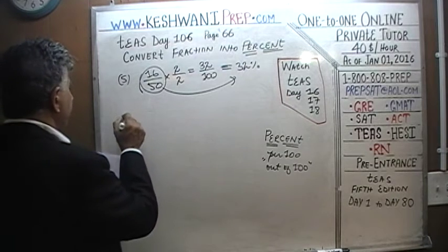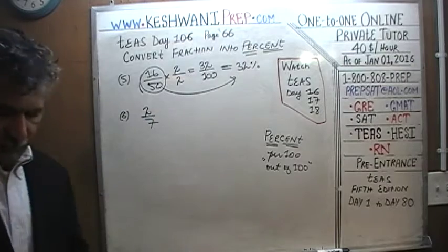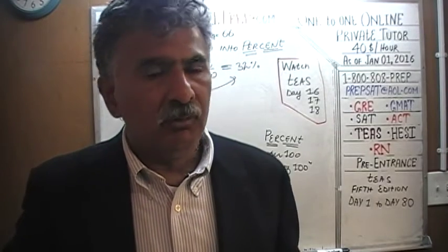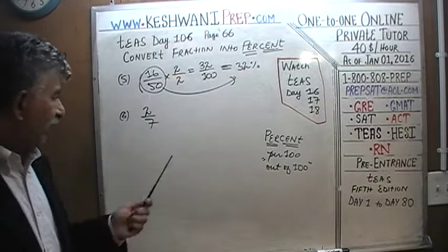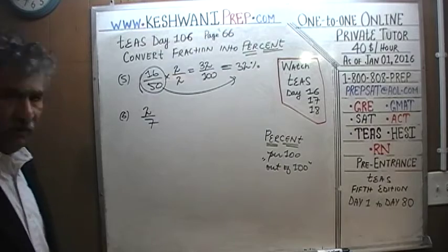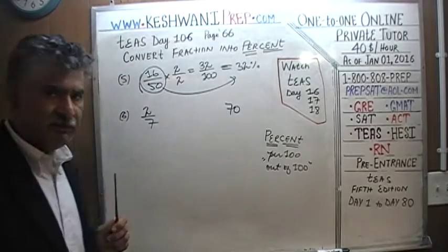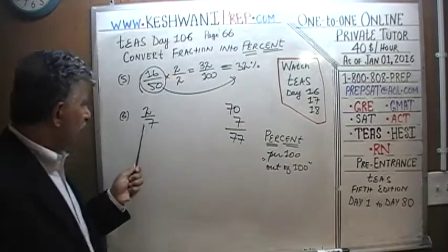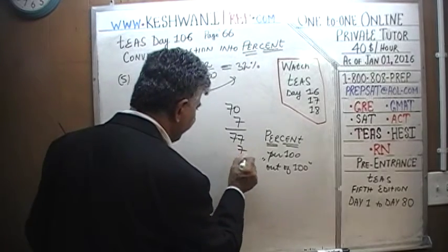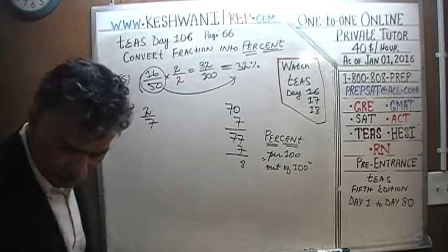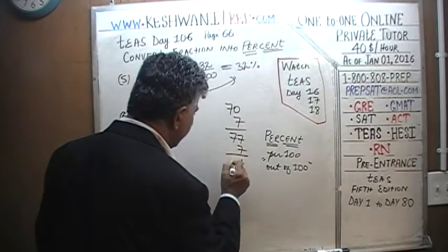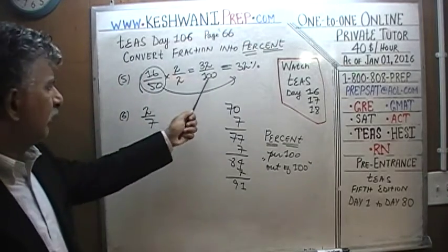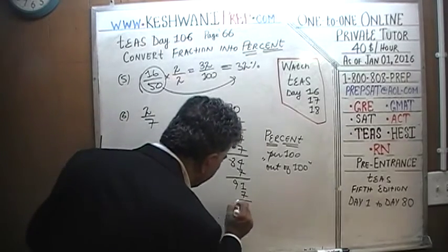Number six: two-sevenths. One hundred does not divide evenly by seven, so we're going to try to get as close to one hundred as possible. I know ten times seven is seventy. Adding one more seven gives seventy-seven — still far off. Adding another gives eighty-four; another gives ninety-one; one more gives ninety-eight. That's about as close to one hundred as we're going to get, because adding one more seven would take us to one hundred and five, which is too far. Our bullseye is one hundred — we get as close as possible either just under or just over it. Ninety-eight is fourteen sevens.